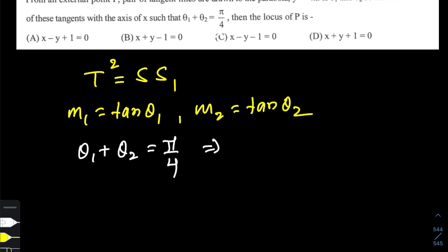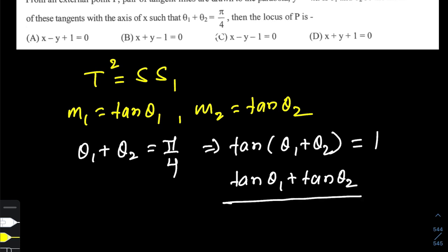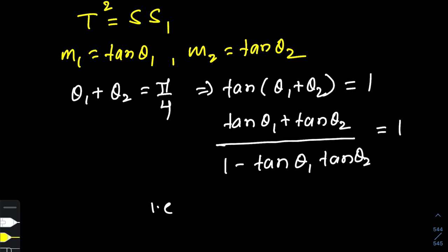If this is true, then tan(θ₁ + θ₂) would be tan(π/4) which is 1. This further expands as per the compound angle identity of tan as (tan θ₁ + tan θ₂)/(1 - tan θ₁ tan θ₂). In short, what is given to you as the locus condition is (m₁ + m₂)/(1 - m₁m₂) = 1. Let's call this locus condition C.